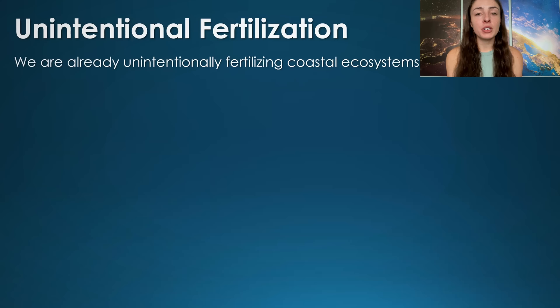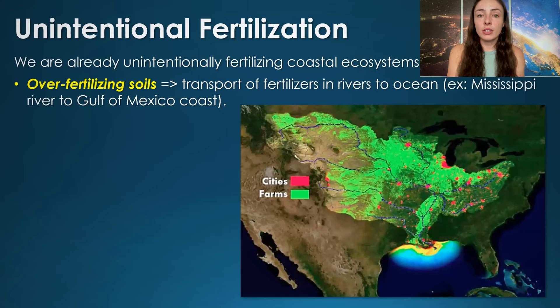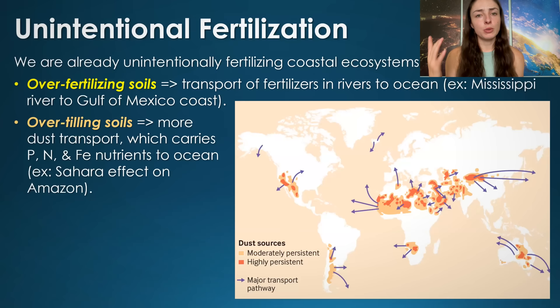In a way, we don't even need to intentionally fertilize the ocean, because we're kind of already doing it unintentionally. One way is through the overuse of fertilizers on land — that fertilizer enters runoff streams, which enter major river systems, which eventually run off into the ocean. Another way is by overtilling soils.